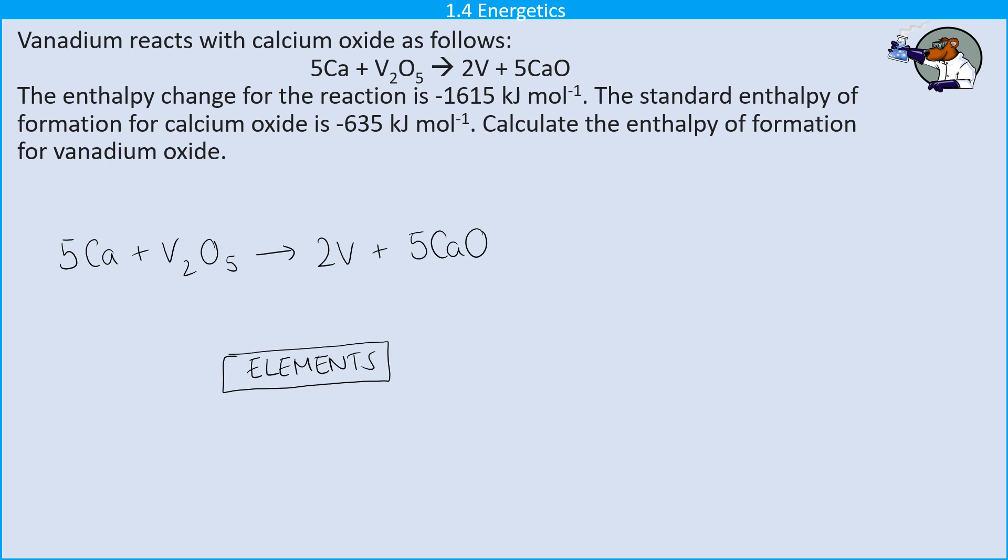Now, the first thing that I can do is to add in some arrows for the substances that are themselves still elements. So, for instance, the calcium here, I know that the enthalpy change there is zero because the calcium was already in its standard state as an element in the box. So by definition, its enthalpy change of formation is zero and I can do the same thing for the vanadium here.